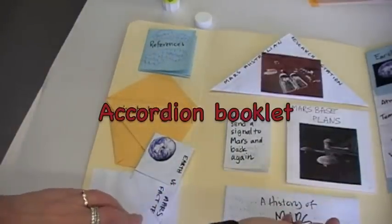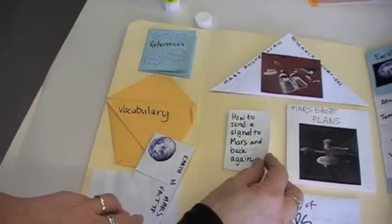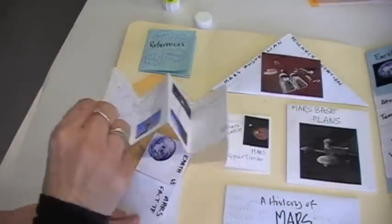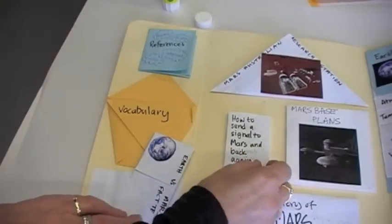So the next thing we're going to look at is a fold-out accordion booklet, and in this instance we've used it on communication between Earth and Mars.